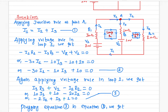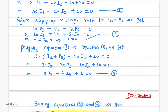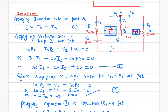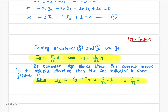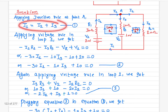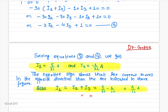The negative sign for I3 means that instead of the current going in the direction I assumed, it should actually be going in the upward direction. If you choose directions randomly, the answer will tell you which direction the current actually flows. I1 = I2 + I3, and adding them together gives us the value of I1.